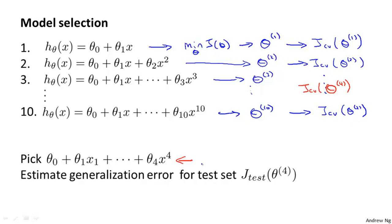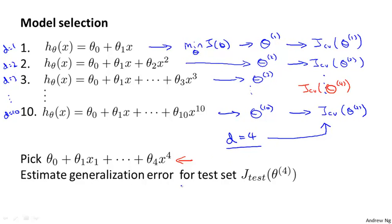What this means is that parameter D — the degree of polynomial — has been fit using the cross validation set, not the test set. So we set D equals four based on cross validation. The parameter is no longer fit to the test set, so we've saved the test set. We can now use the test set to measure and estimate the generalization error of the model selected by this algorithm.